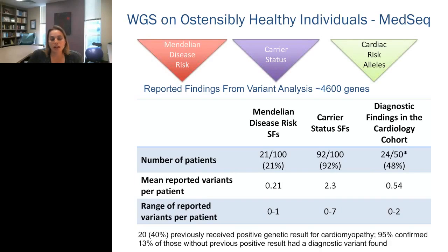Of those in the cardiology cohort — 50 individuals — about half had a diagnostic finding related to their cardiomyopathy. Of those, 40% had previously received a positive genetic result from a cardiomyopathy panel, and 95% of those results were confirmed. Of those who had not received a previous panel finding, 13% had a positive result on whole genome sequencing. So we're finding quite a bit of clinical utility and diagnostic yield using whole genome and whole exome sequencing in the clinical care of patients.